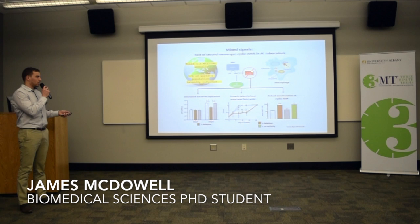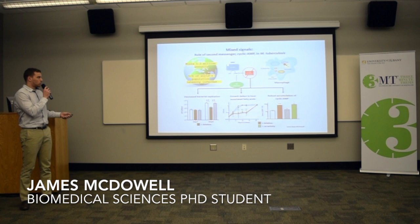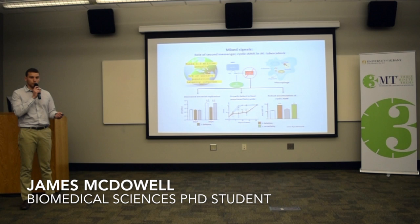Now, TB has 16 enzymes that make cyclic AMP and 10 enzymes that bind cyclic AMP. So how does TB ensure that the cyclic AMP produced is from the correct signal, and that that cyclic AMP reaches the correct protein?